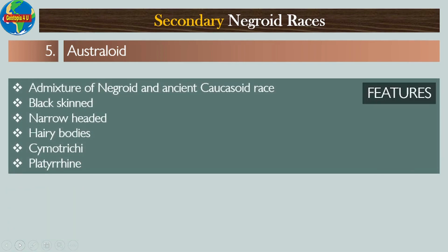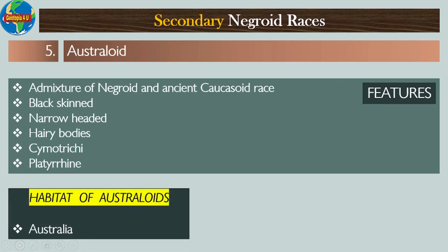Number five: Australoid race. The features of the Australoid race are: they are an admixture of Negroid and ancient Caucasoid race; they are black-skinned; they have a narrow head; they have hairy bodies; they have ulotrichous hair; and they are platyrrhine. The habitat of the Australoids includes the entire Australian continent.